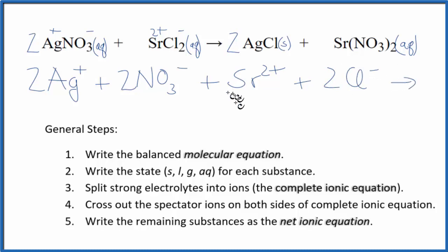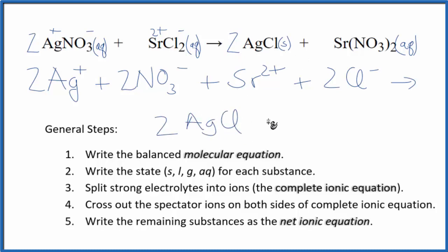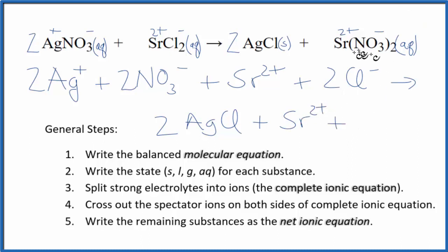Those are the reactants. For the products, in net ionic equations we don't split solids apart, so we're just going to write two AgCl — it'll stay together. And then strontium was two plus, nitrate one minus. So I have Sr two plus, plus two of those nitrate ions.